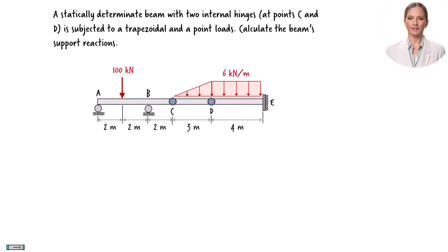A beam with two internal hinges is subjected to a trapezoidal load and a point load. Let's calculate the beam's support reactions.